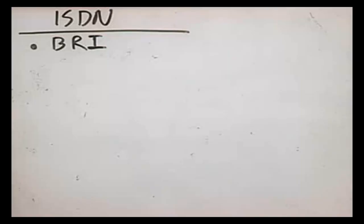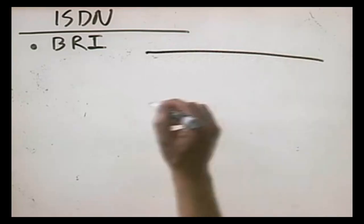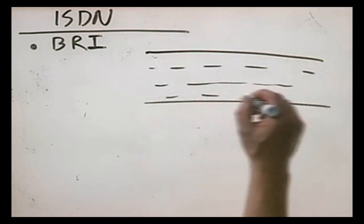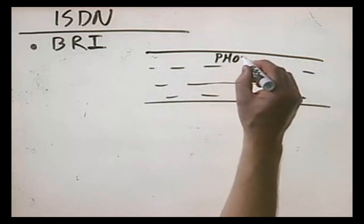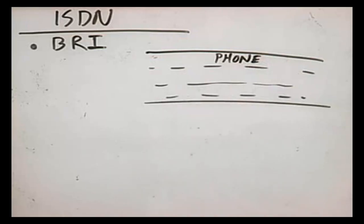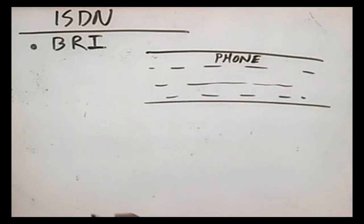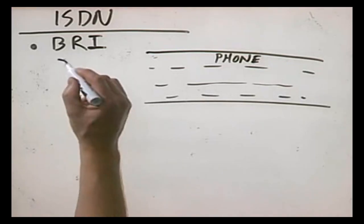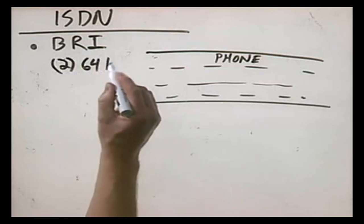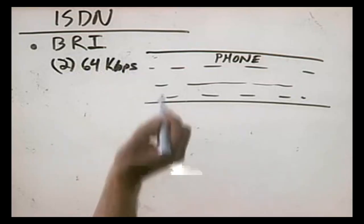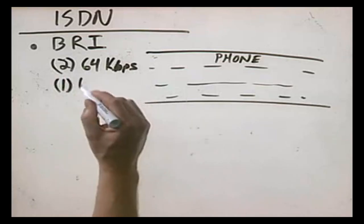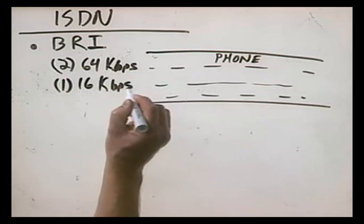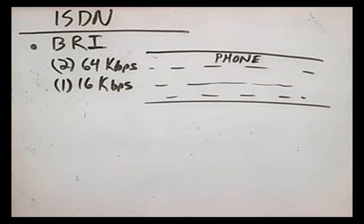The basic level is called the Basic Rate Interface, or BRI. With BRI, we take our phone line, just like with DSL, and divide it up into channels. We have our phone channel so we can still make telephone calls, and we use the rest of the bandwidth for digital communications. With BRI, we have three channels — two 64 kilobit per second channels used for data, and one 16 kilobit per second channel used for connection control. If you were going to install a connection at home or your home office, more than likely you would use the BRI interface.